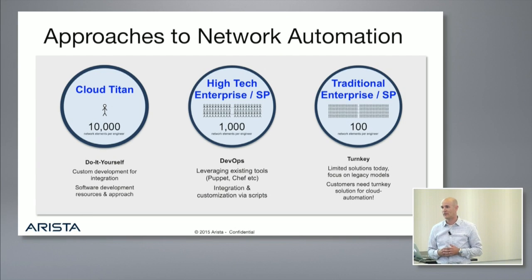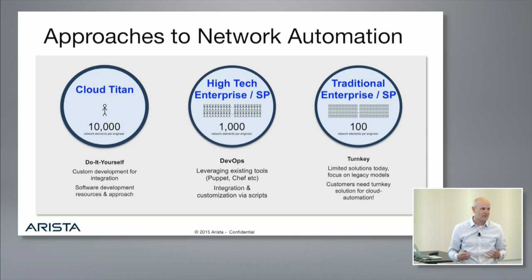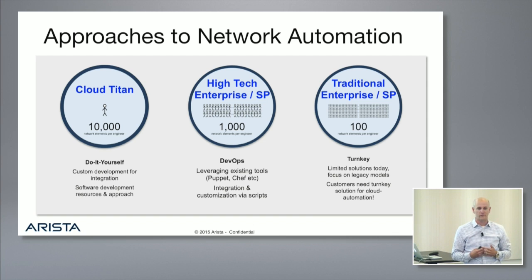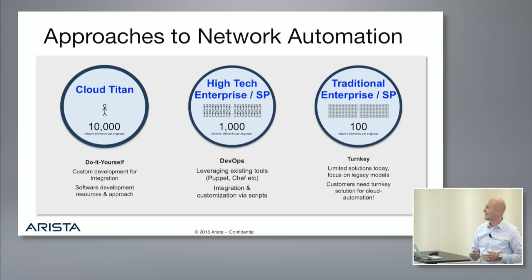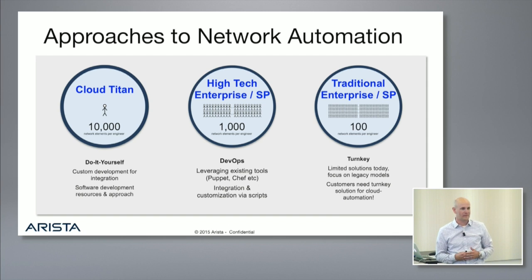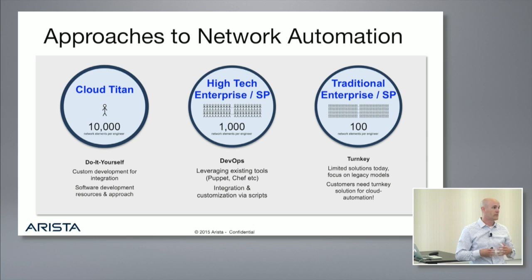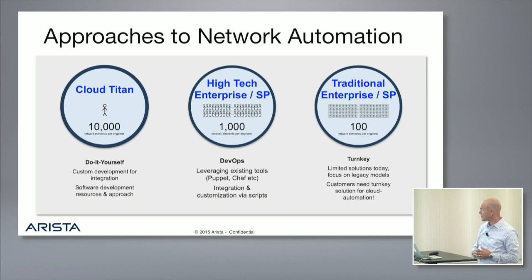If we take a look at the spectrum of customers from the perspective of automation — network automation is one of the trends in cloud networking. A lot of the principles applied to compute in terms of automating compute infrastructure have been reapplied to the networking space, and part of that was the network needed to be more programmable. The type of customer Ryan was just talking about is in what we call the do-it-yourself category — folks that have full software development staff on board, writing their own controllers and doing SDK-level programming to automate and take deeper control of the networking infrastructure.